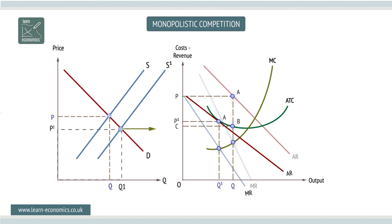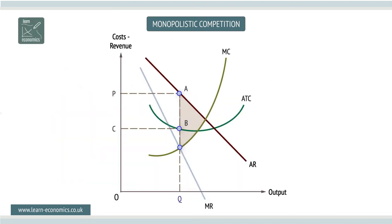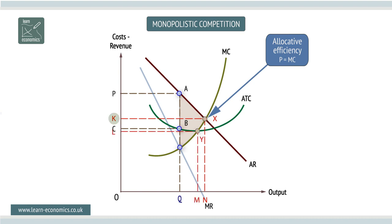The firm operating under monopolistic competition is inefficient in both the long run and the short run. Allocative efficiency exists when price equals marginal cost, but for this firm, price is greater than marginal cost.